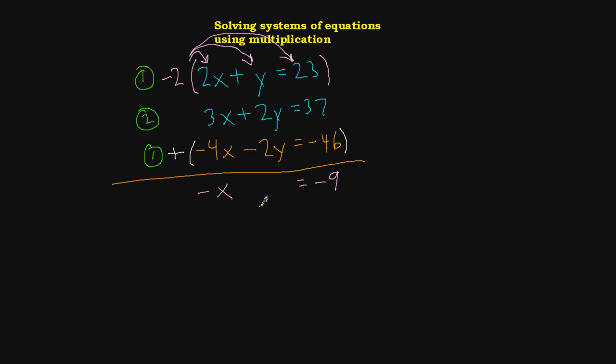Okay. And then I'll go ahead and get rid of these negative signs by multiplying both sides of the equation by negative 1. And when I do, I end up with just x equals 9.